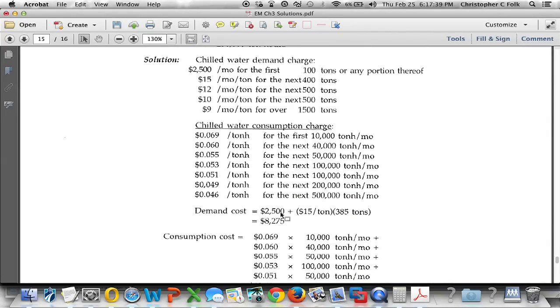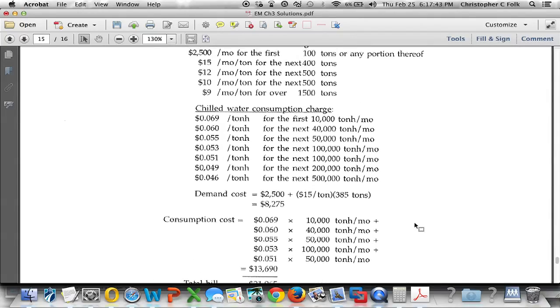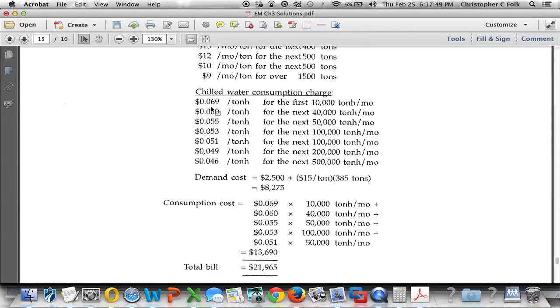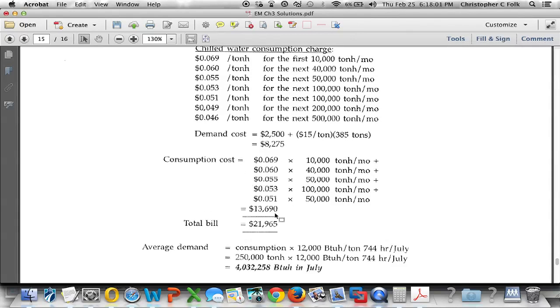And then as far as the consumption cost goes, we have to look at this. We used a total of 250,000 ton hours. And again, we have an escalating rate. So the first 10,000 uses almost 7 cents per ton hour. The next 40,000 uses 6 cents per ton hour, and so on and so forth. And it comes right out to be this was the consumption cost.